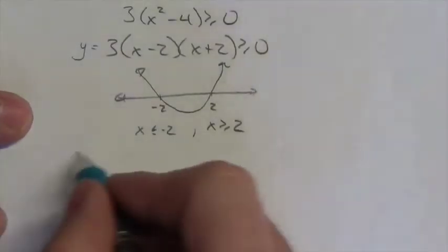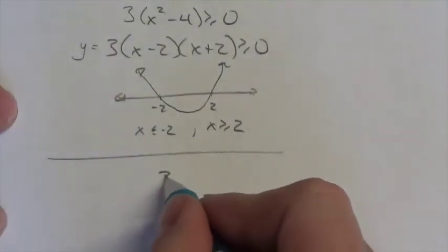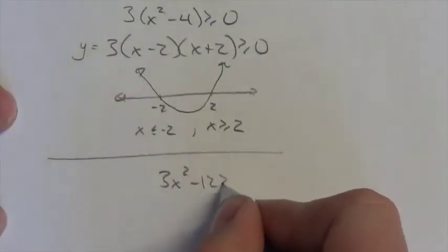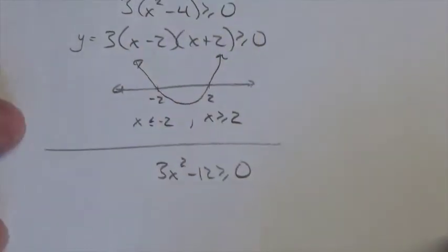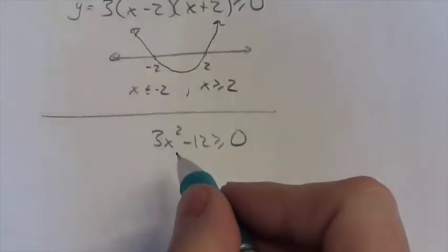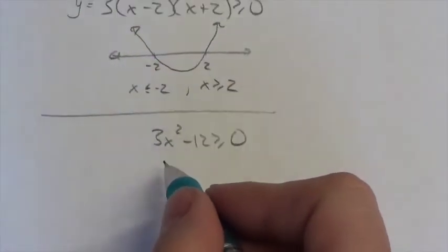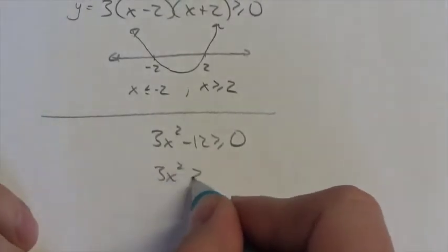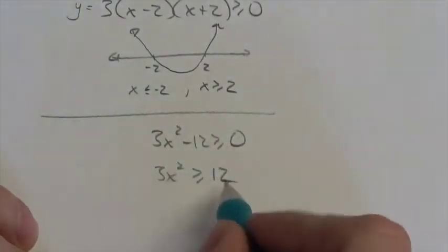Now another way that you could have done this, okay, is when we've got 3x squared minus 12 is greater than or equal to zero. So if you'd rather, you could have taken and made this 3x squared is greater than or equal to positive 12, and then divide it by 3.